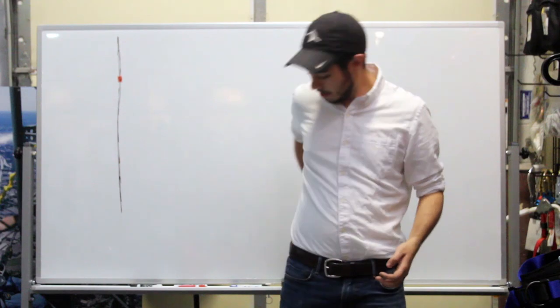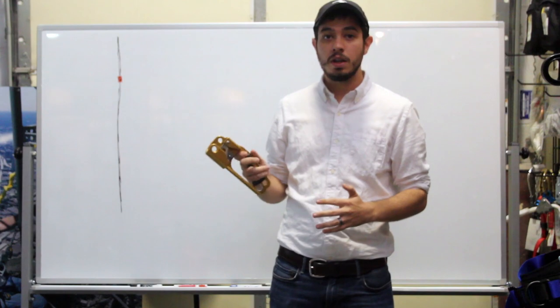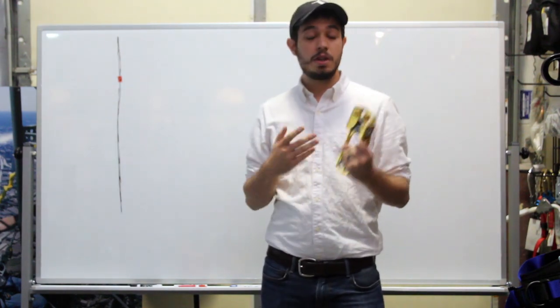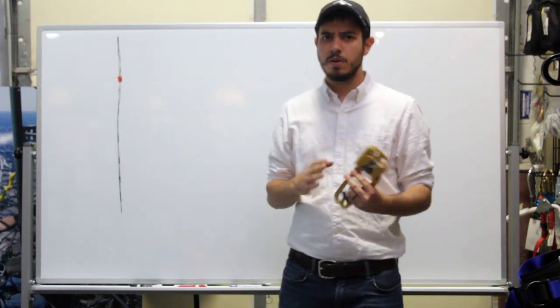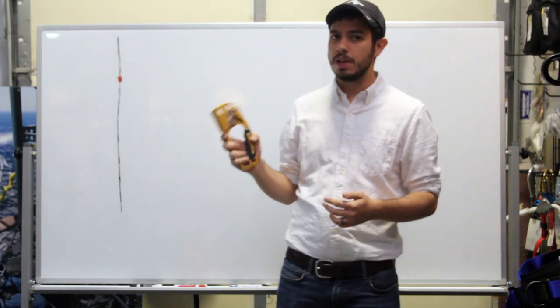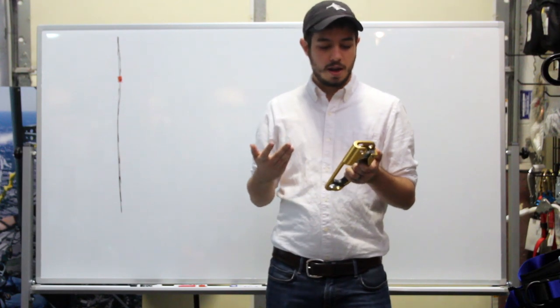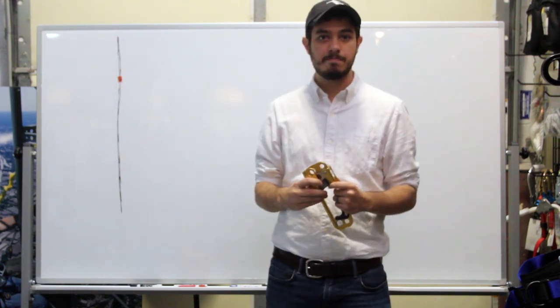Today we are talking about hand ascenders. Now hand ascenders are an awesome tool to help you go up a rope, but they should not be used as backup devices. You've probably heard that before, but I know a lot of window cleaners out there still swear by them as backup devices. So, we thought, let's take a look at what actually happens if you were to fall onto a hand ascender and you were using it as your backup device.